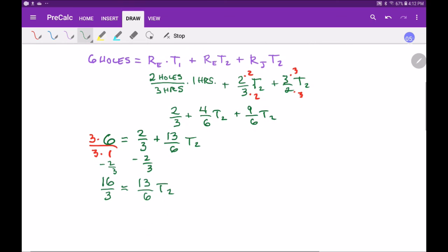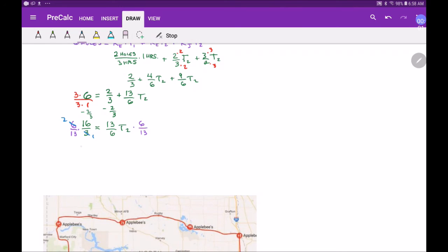Now I want the t2 alone because I want to know how long will they work together to finish digging the six holes. So I'm going to multiply by six over 13 on both sides. The three and the six cancel. Two times 16 is 32 over 13 equals t2.